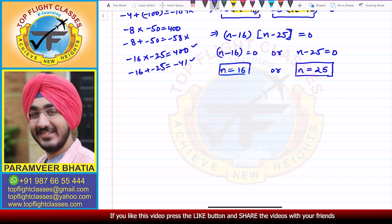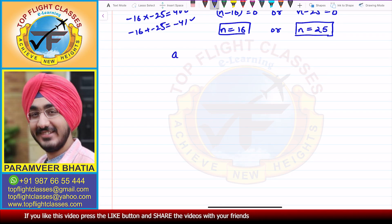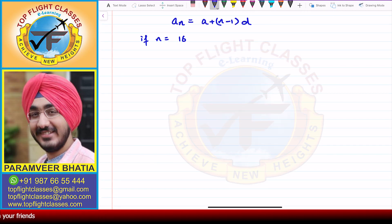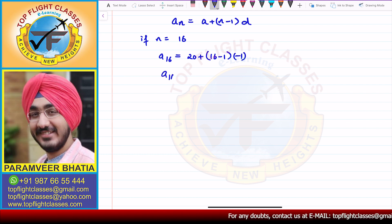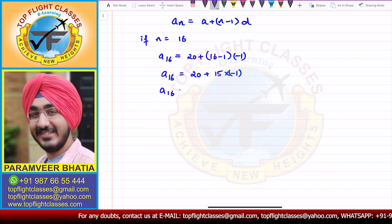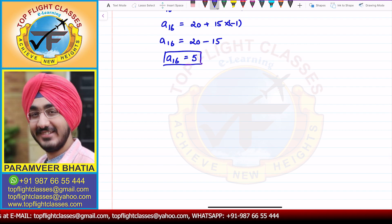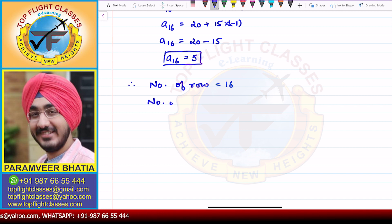We need the nth term. The nth term is equal to A plus (n minus 1) times D. If n equals 16, then a₁₆ equals 20 plus (16 minus 1) times minus 1, which is 20 plus 15 times minus 1, giving a₁₆ equals 20 minus 15, so a₁₆ equals 5. Therefore, the number of rows comes out to be 16 and the number of logs in the topmost row is 5.